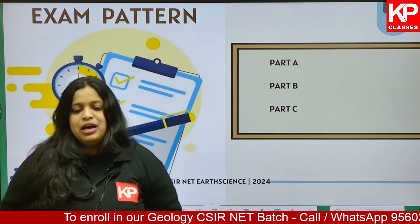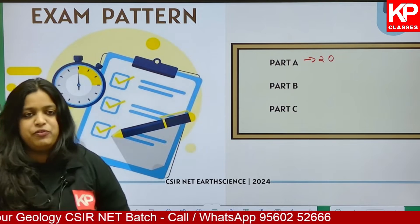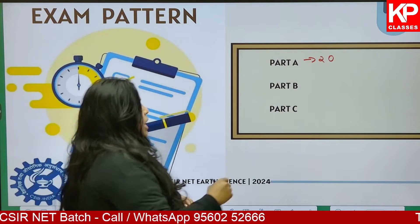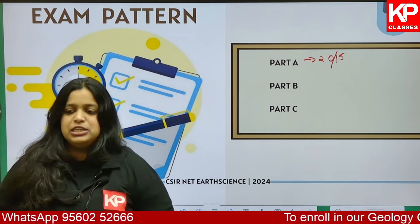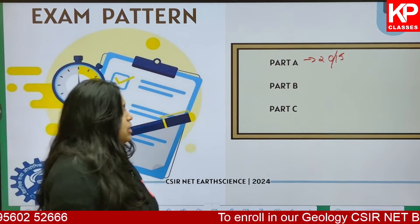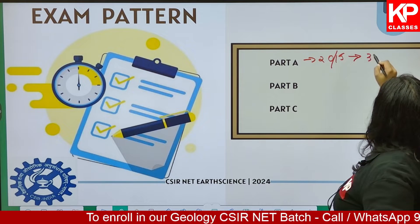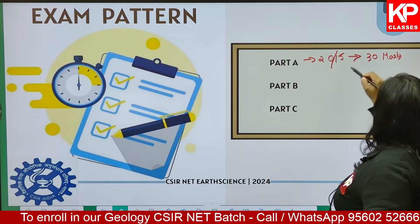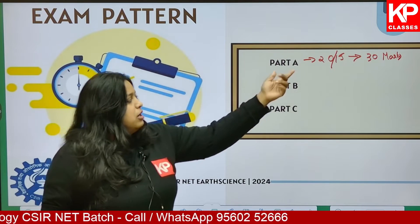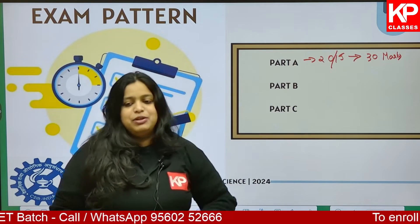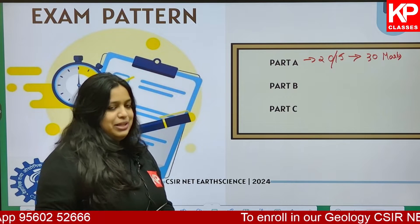In Part A, there are a total of 20 questions provided, and out of these 20, the maximum number of questions you can attempt is only 15. Each question carries 2 marks, so the total mark of this section is 30. There is negative marking — for a 2-mark question in Part A, there will be a negative marking of 0.5, that means 25% negative marks.